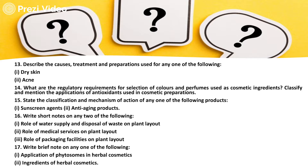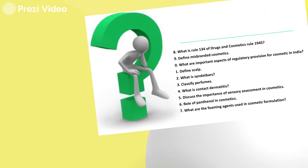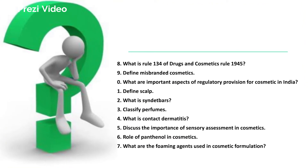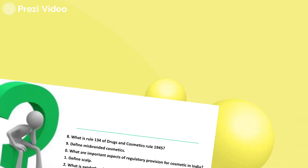Additional questions: state the classification and mechanism of action of sunscreen agents and anti-aging products; write short notes on the role of water supply and disposal of waste on plant layout, role of medical services on plant layout, and role of packaging facilities on plant layout; write a brief note on application of phytosomes in herbal cosmetics and ingredients of herbal cosmetics. What is Rule 134 of Drug and Cosmetic Rule 1945? Define misbranded cosmetics. What are important aspects of regulatory provisions for cosmetics in India? Define scalp. What are sindhi bars? Classify perfumes. What is contact dermatitis? Discuss the importance of sensory assessments in cosmetics. What are forming agents used in cosmetic formulations?